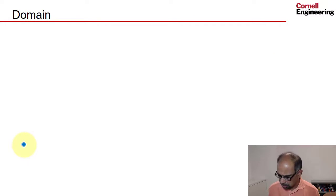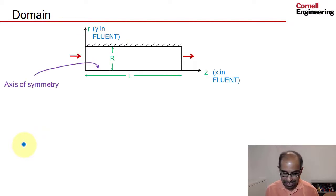With the axisymmetric assumption, we can also figure out what is the domain over which we want to solve the governing equations, and it turns out to be a rectangle. This is the axial coordinate, that's the axis of symmetry, that's the radial coordinate, that's the wall, that's where the flow is coming in, and that's where the flow is going out.